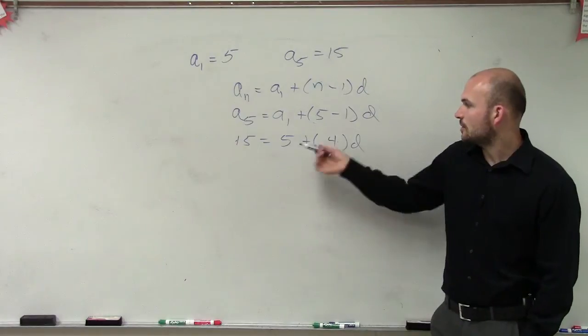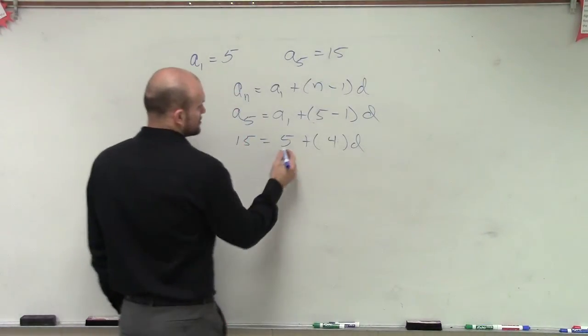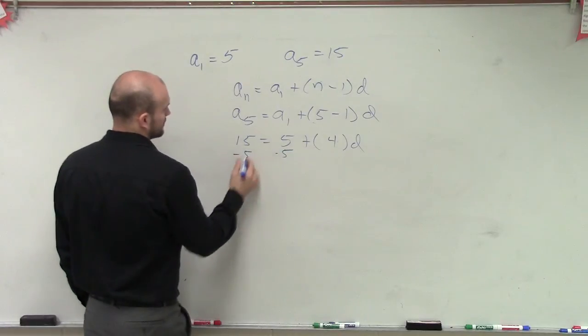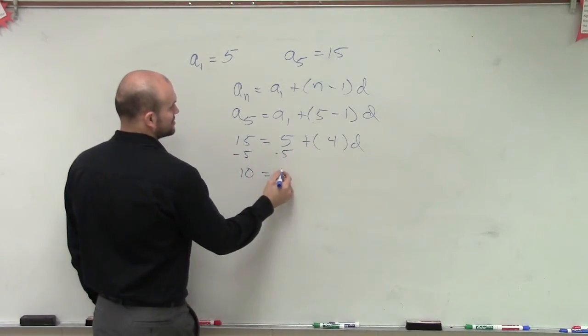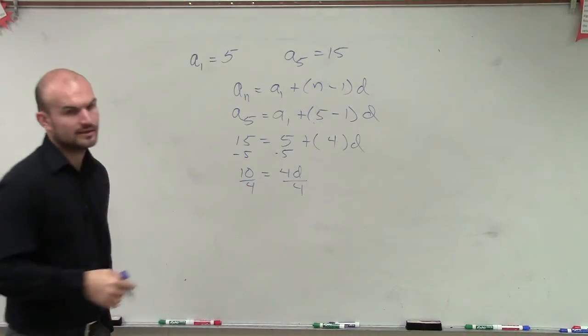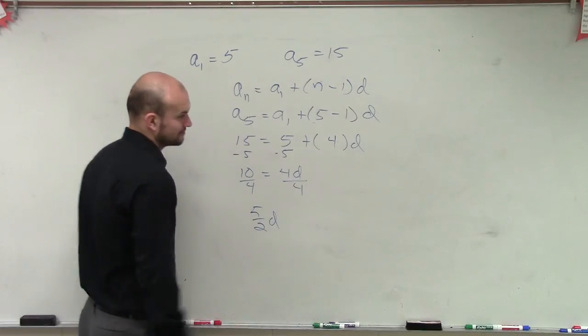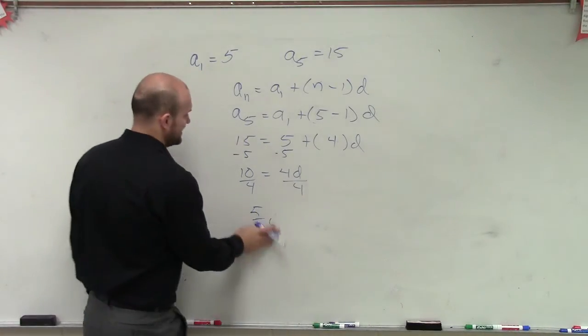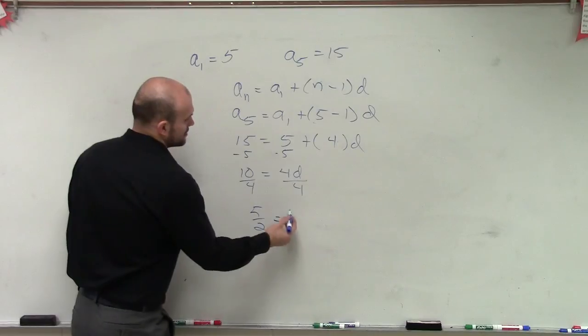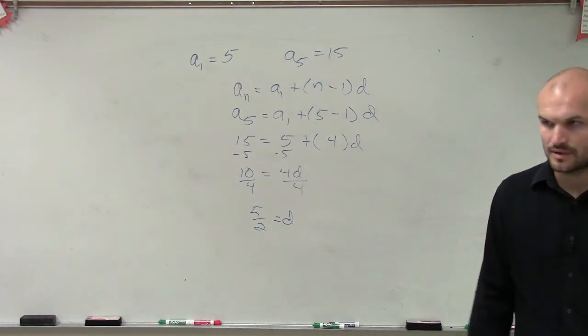So therefore now what we'll just do is we'll go ahead and solve for our d. So we'll subtract 5, 10 equals 4d, divide by 4, and then you can simplify this, reduce it, down to 5 halves equals d. So now we know d equals 5 halves.